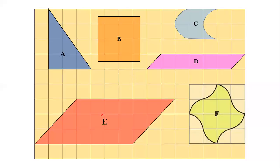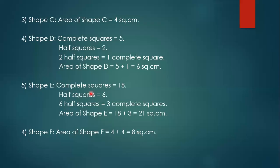Now shape E. First we will count how many complete squares are there. Counting from here: 1, 2, 3, 4, 5, 6, 7, 8, 9, 10, 11, 12, 13, 14, 15, 16, 17, 18 complete squares. How many half squares? 1, 2, 3, 4, 5, 6 — that means 18 complete squares and 6 half squares. 6 half squares means 3 complete squares. So total: 18 + 3 = 21 square centimeters.